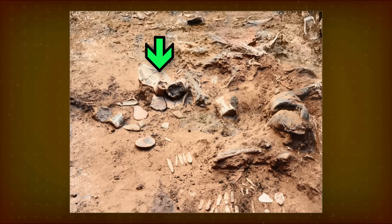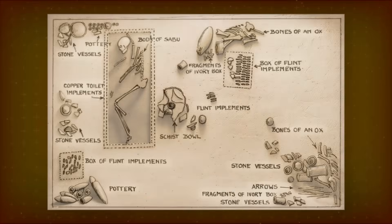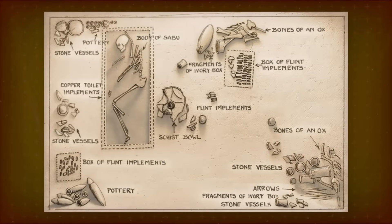The disk lay closer to the center, broken up in pieces. What's often omitted in descriptions of the disk's discovery, and which may be relevant, is that Sabu's tomb had been robbed in antiquity.